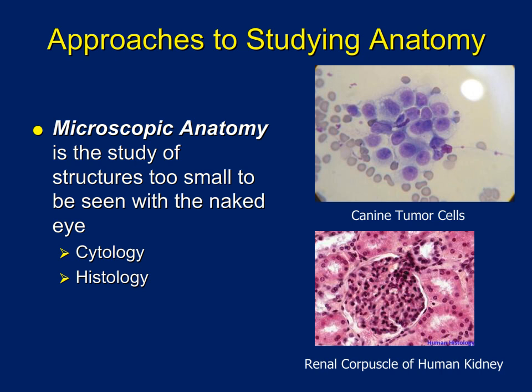Histology, on the other hand, talks about whole tissues. For example, if a dog has a suspected tumor and we take a punch biopsy, section it, and place it on a microscope slide, that would be an example of a histological observation.